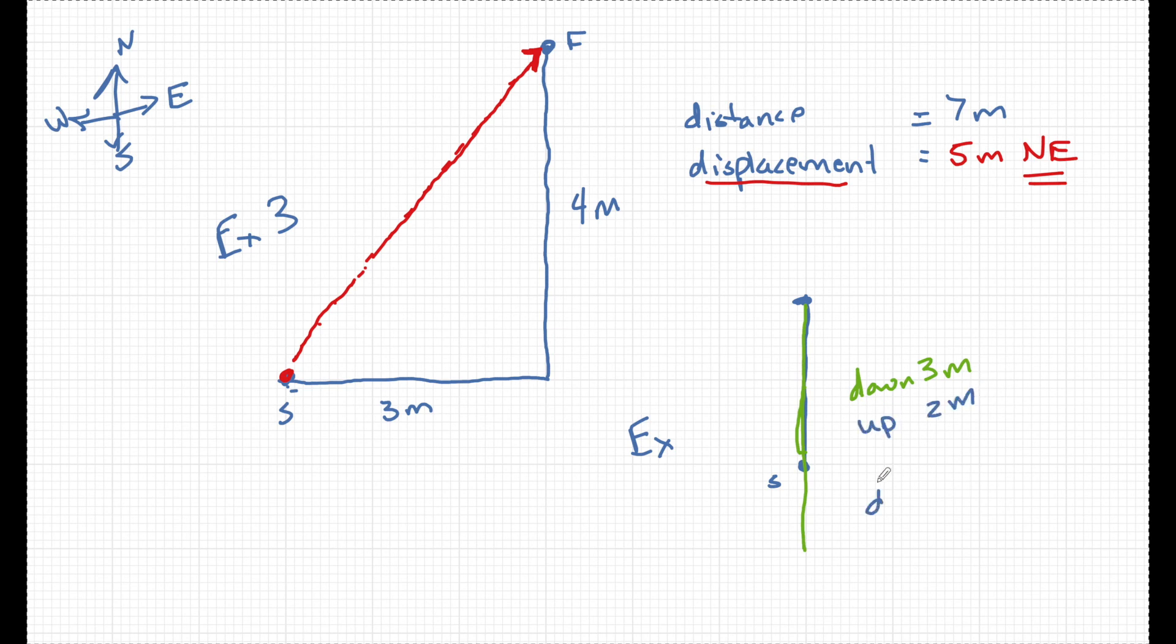What is my distance and displacement? My distance is going to be the total traveled. So my total traveled is going to be five meters. But from the start to the finish right here with an arrowhead from the start to the finish is only going to be one meter south.